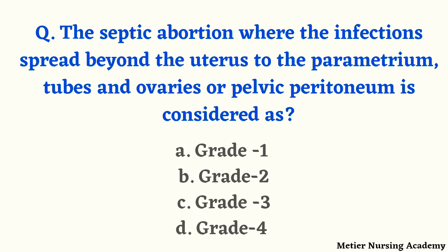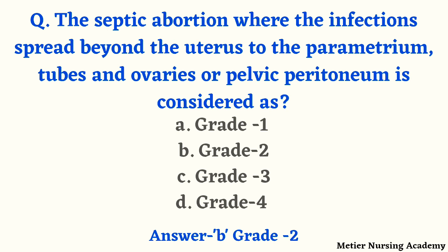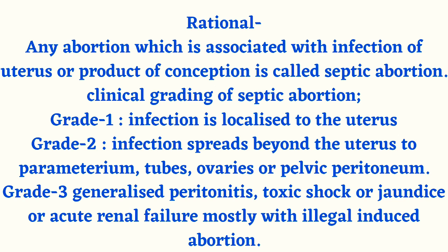Septic abortion where infection spreads beyond the uterus to the parametrium, tubes, ovaries, or pelvic peritoneum is considered as — grade 1, grade 2, grade 3, or grade 4? The right answer is option B. Any abortion associated with infection of the uterus or product of conception is called septic abortion. Clinical gradings: grade 1 — infection localized to the uterus; grade 2 — infection spreads beyond the uterus to the parametrium, tubes, ovaries, or pelvic peritoneum; grade 3 — generalized peritonitis, toxic shock, jaundice, or acute renal failure, mostly with illegally induced abortion.